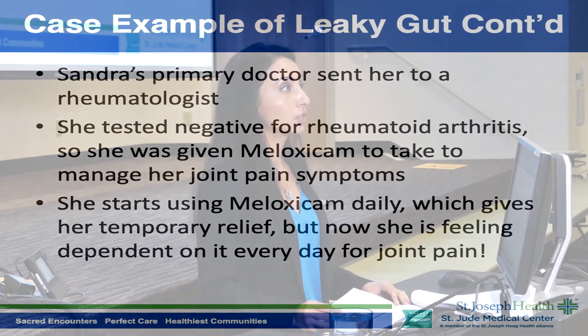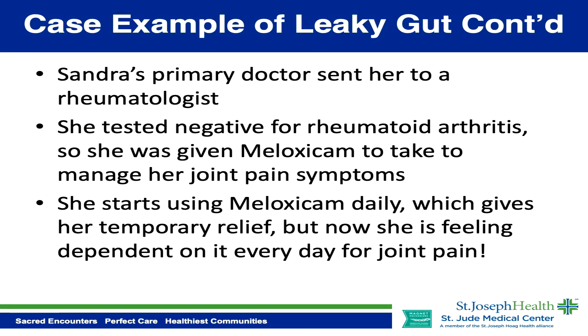Sandra's primary doctor sends her to a rheumatologist. She is tested for rheumatoid arthritis, but it comes back negative. Her rheumatologist puts her on meloxicam to manage her joint symptoms. Meloxicam is a pain medication in the NSAID family, similar to ibuprofen, and just like ibuprofen it can be harsh on the gut. She starts using meloxicam daily, which gives temporary relief, but she feels dependent on it and isn't sure it's addressing her underlying problem.